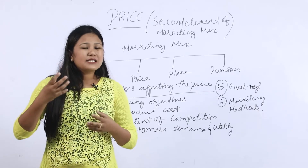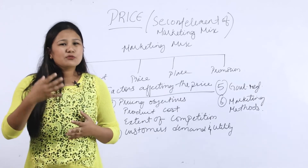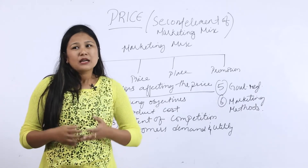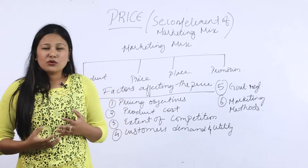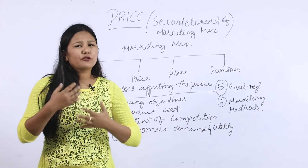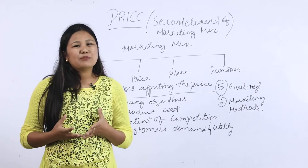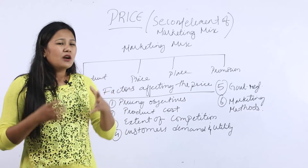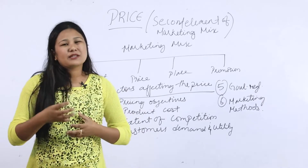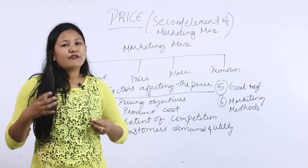The third pricing objective is attaining product quality leadership. If your product quality is very high and you want to adopt quality leadership, you need to provide standard and sophisticated quality products. To cover the cost of such quality, you need to increase your price. So considering all these objectives — profit maximization, sales maximization, market leadership, survival, and quality leadership — you need to determine the price of your commodity and services accordingly.